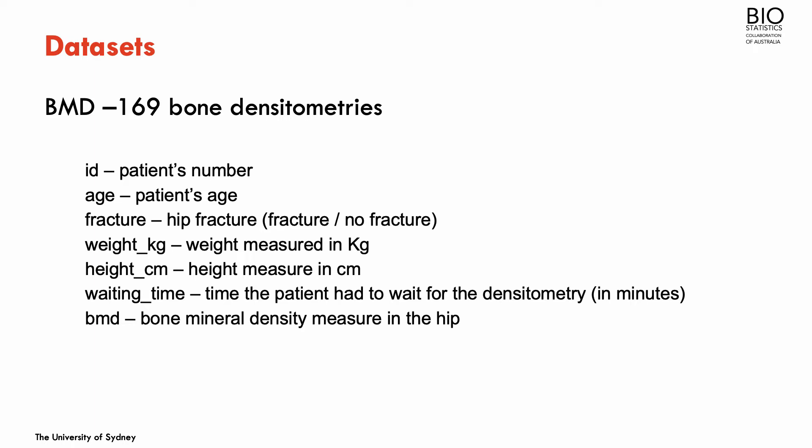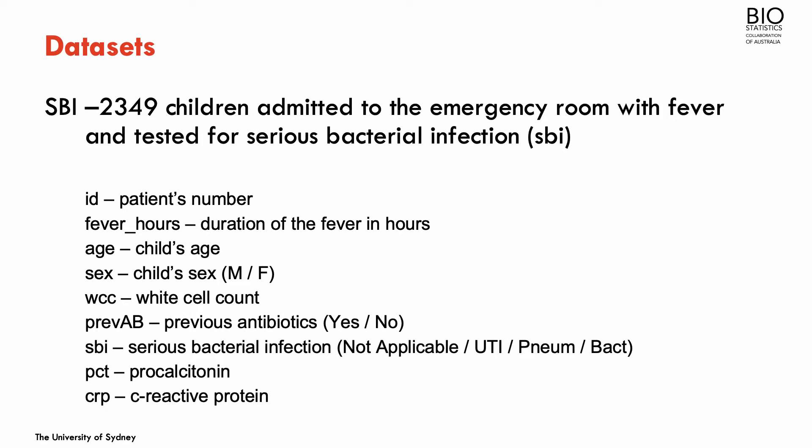Now we're going to shift our interest to the variable fracture, which is a dichotomous variable — hip fracture, yes or no — and we're going to use the other variables in the dataset to try to predict fracture. The second dataset contains more than 2,000 records of children admitted to the emergency room with fever and tested for serious bacterial infection. The outcome here is SBI, serious bacterial infection, which has four categories: not applicable or no infection, UTI, pneumonia, and bacteremia. Several other variables will be used to predict SBI.